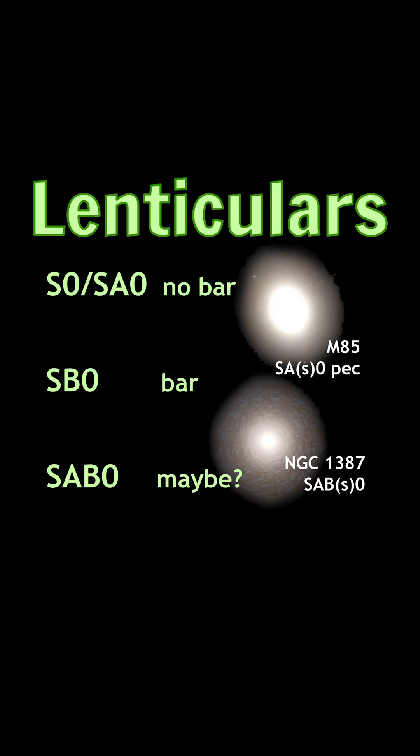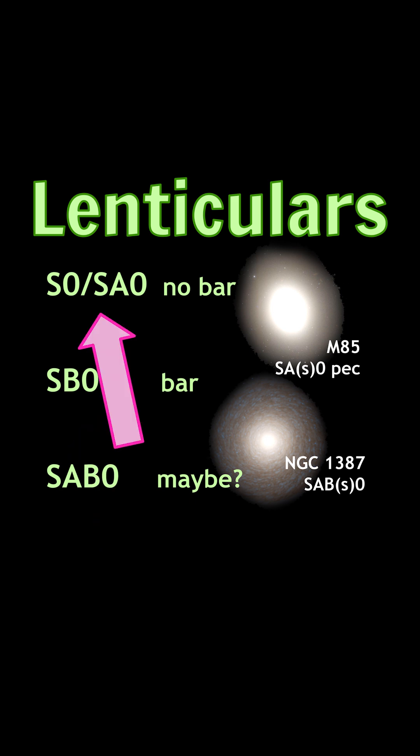Lenticulars are classified first based on whether they have a bar or not. If they have a bar, we give them SB0. If not, then it's SA0 or S0. And if it's in between, it's SAB0.